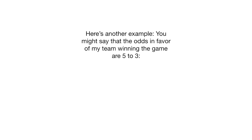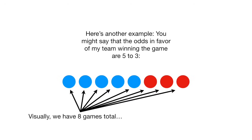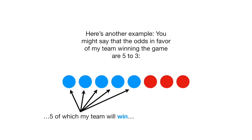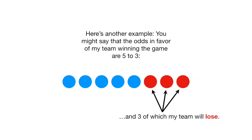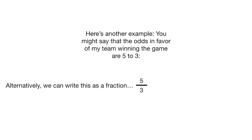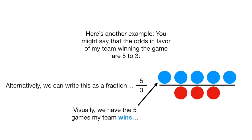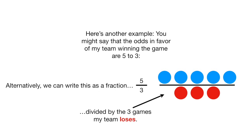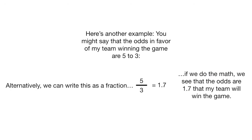Here's another example. You might say that the odds in favor of my team winning the game are 5 to 3. Visually, we have eight games total, five of which my team will win, and three of which my team will lose. So the odds are 5 to 3. Alternatively, we can write this as a fraction, 5 divided by 3. We have the five games my team wins divided by the three games my team loses. If we do the math, we see that the odds are 1.7 that my team will win the game.